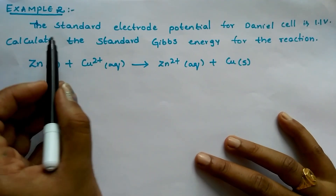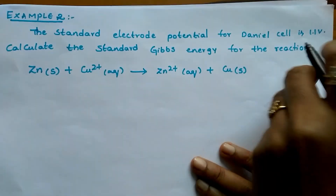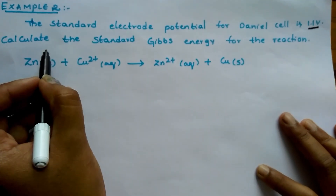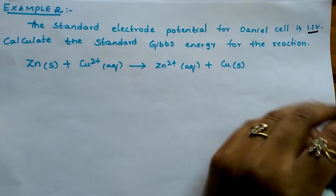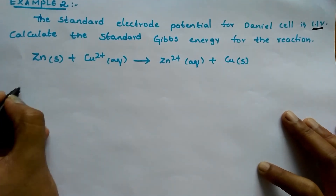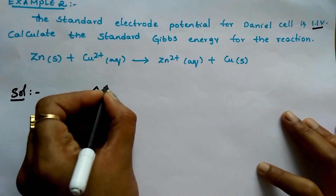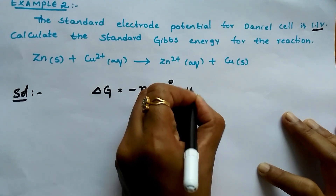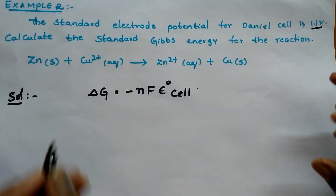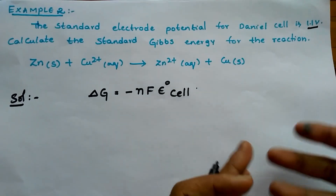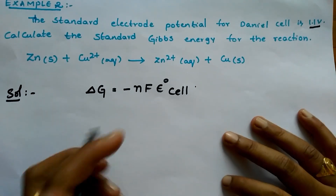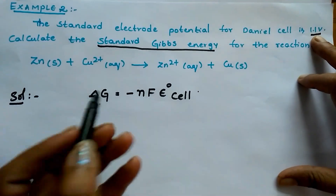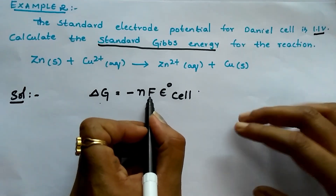This is the second numerical. The standard electrode potential for the Daniell cell is 1.1 volts. They gave the electrode potential and are asking to calculate the standard Gibbs energy for the reaction. The formula is: ΔG° = −NF × E° cell. Whenever you read a particular numerical, first write the given data and identify the relevant formula — then you can solve it easily. Here ΔG° is asked, E° cell is given as 1.1 V, and F is 96500 coulombs. We need to find N.